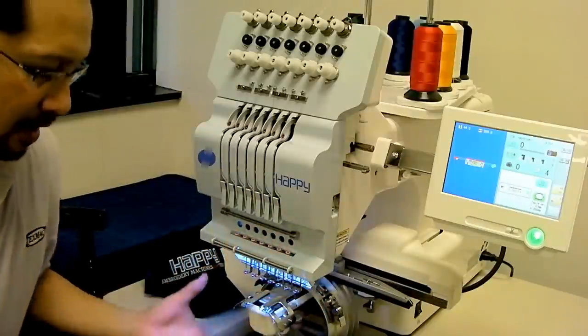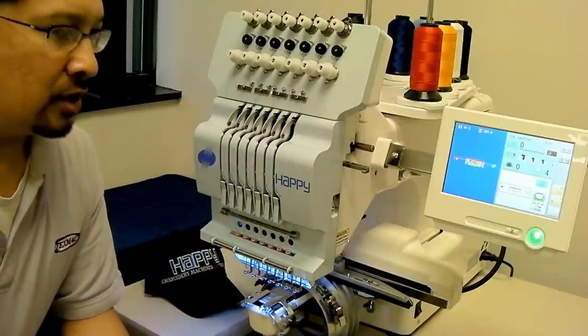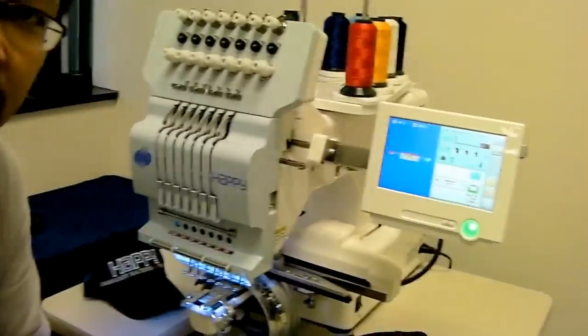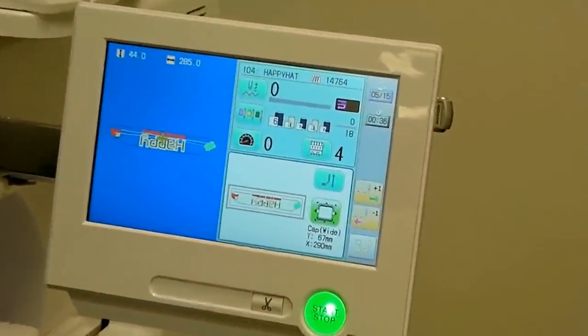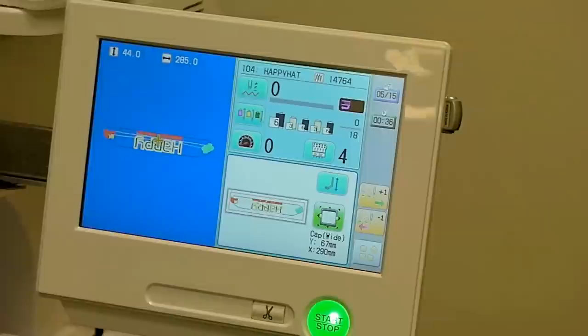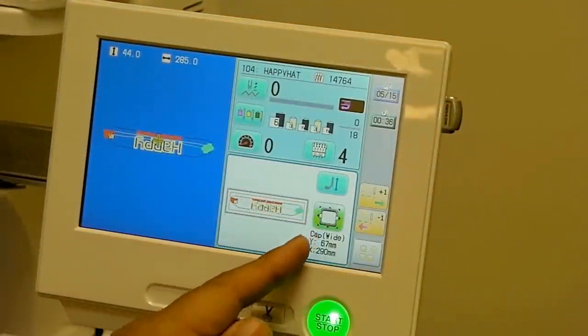First we have the optional cap driver installed onto the machine, and on turning on the machine, the Journey machine itself does a couple of things automatically. First it flips the design upside down, since the cap itself is oriented upside down onto the machine, and it also automatically displays the sewable area at 11.5 by 2.5 inches.